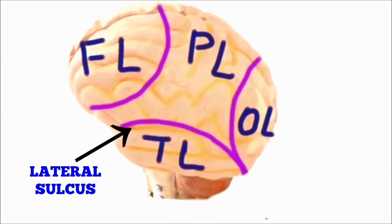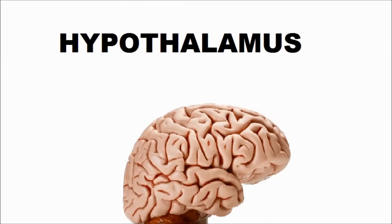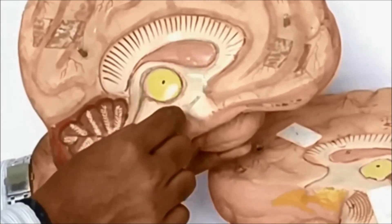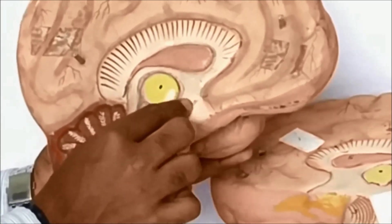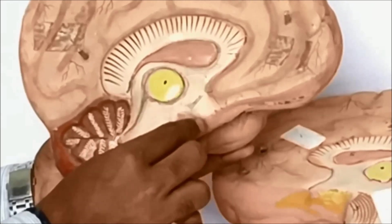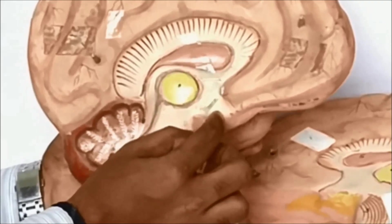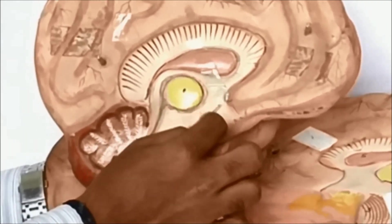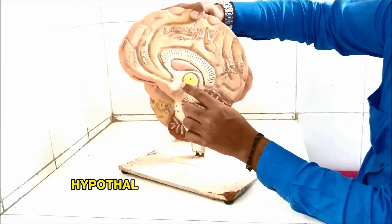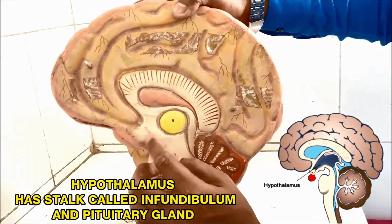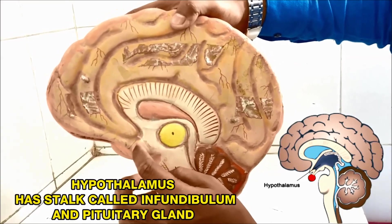The hypothalamus is present in the diencephalon region, below the thalamus. It consists of a stalk called the infundibulum, which holds the pituitary gland — called the master gland. Even though the pituitary is the master gland, it is itself under the control of the hypothalamus.